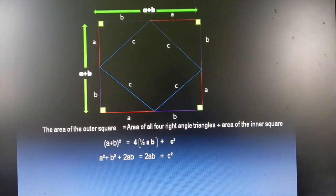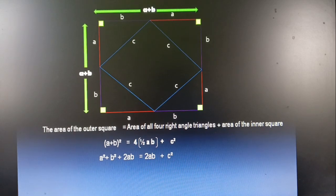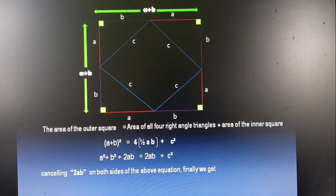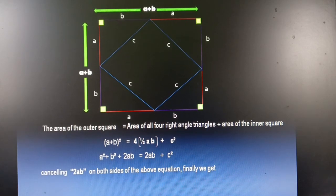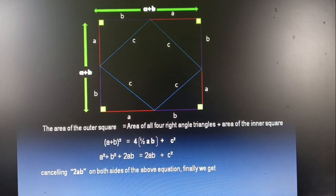On cancelling 2AB on both sides of the equal sign, we will have A square plus B square equal to C square. So friends, we have finally proved the Pythagoras theorem.